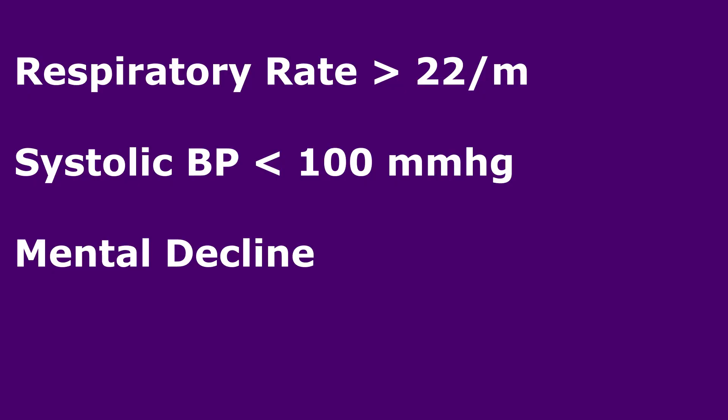A systolic blood pressure of less than 100 millimeters of mercury, combined with a respiratory rate of more than 22 breaths per minute and mental decline — these three parameters are clinical indicators that the patient is having sepsis with an infection. Treat this patient for sepsis.